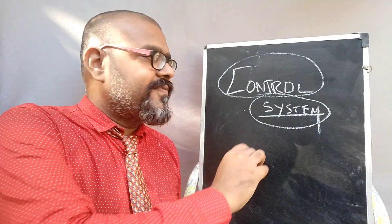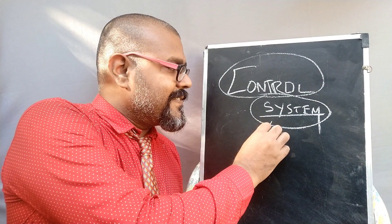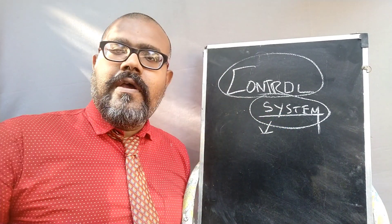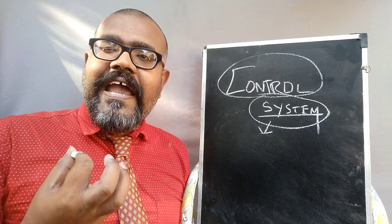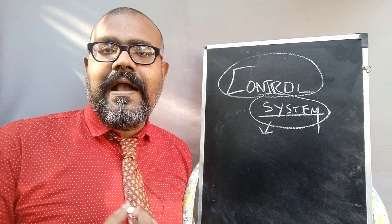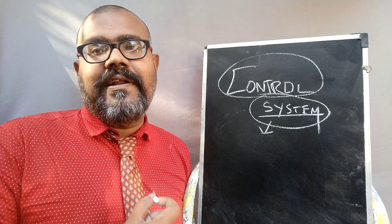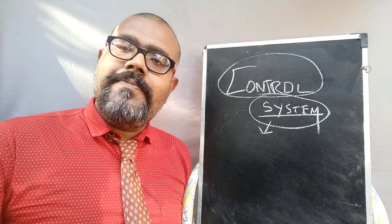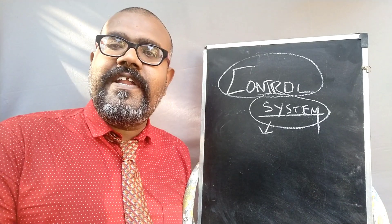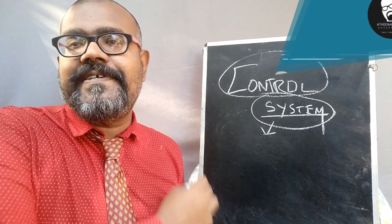The definition of the system is: a group of elements combined together to do some special function is called as the system.